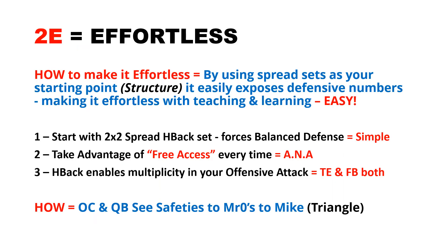How can we make this whole process effortless? By using these spread sets as your starting point and structure, it exposes defensive numbers easily and makes it effortless for your teaching and learning. We always like to start with two-by-two spread sets, which forces the defense to be perfectly balanced, keeping it really simple to teach and learn. Second, we want to take advantage of free access every time — meaning we have access to throw on the perimeter — using what's called Ana: access, no access. Third, we like an H-back because it enables multiplicity in your offensive attack. He can be a tight end or a fullback, giving us great opportunities to be balanced in our run and pass game. The OC and quarterback have to see safeties first, then go to those hanging outside linebackers — which we call Mr. Zeros — and then finally inside to the mic, hence the triangle.